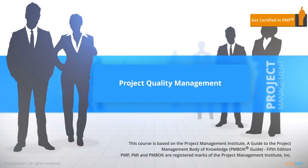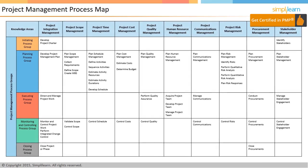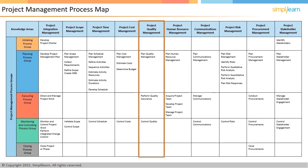Hello and welcome to PMP certification course offered by Simply Learn. In this lesson we will focus on project quality management. There are 47 processes in project management grouped into 10 knowledge areas and mapped to five process groups. In this lesson we will look at the fifth knowledge area, that is project quality management and its processes.